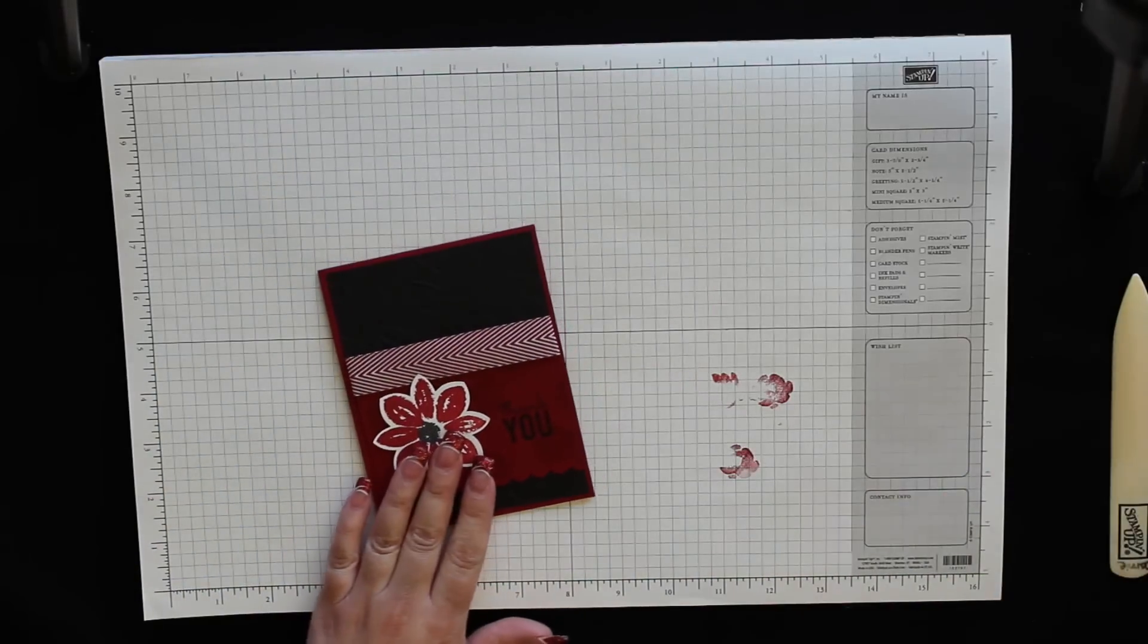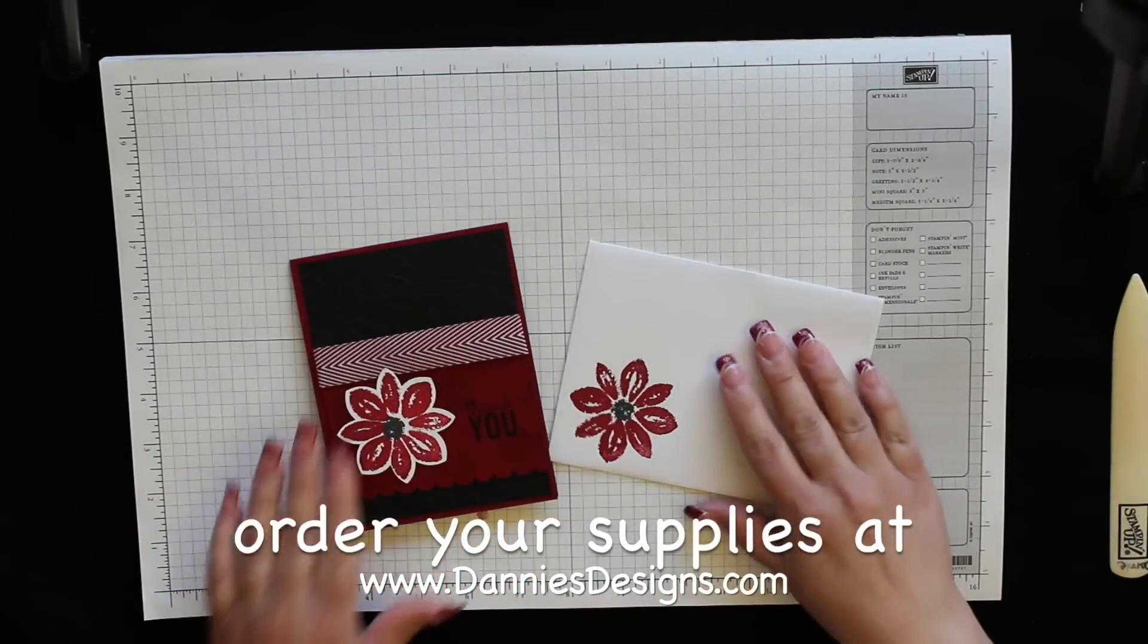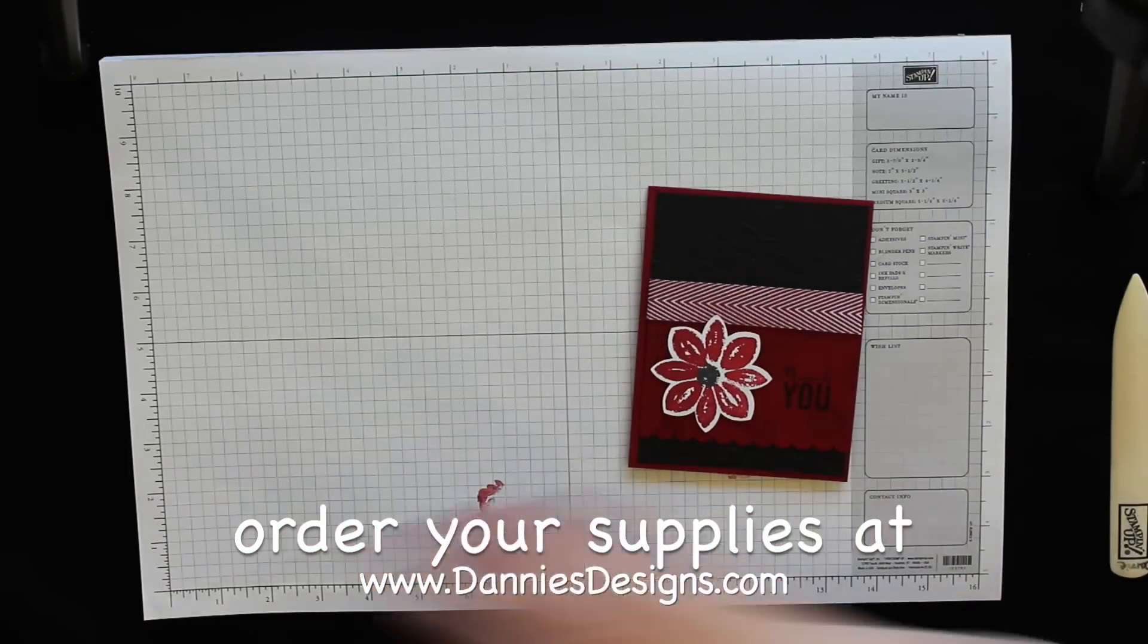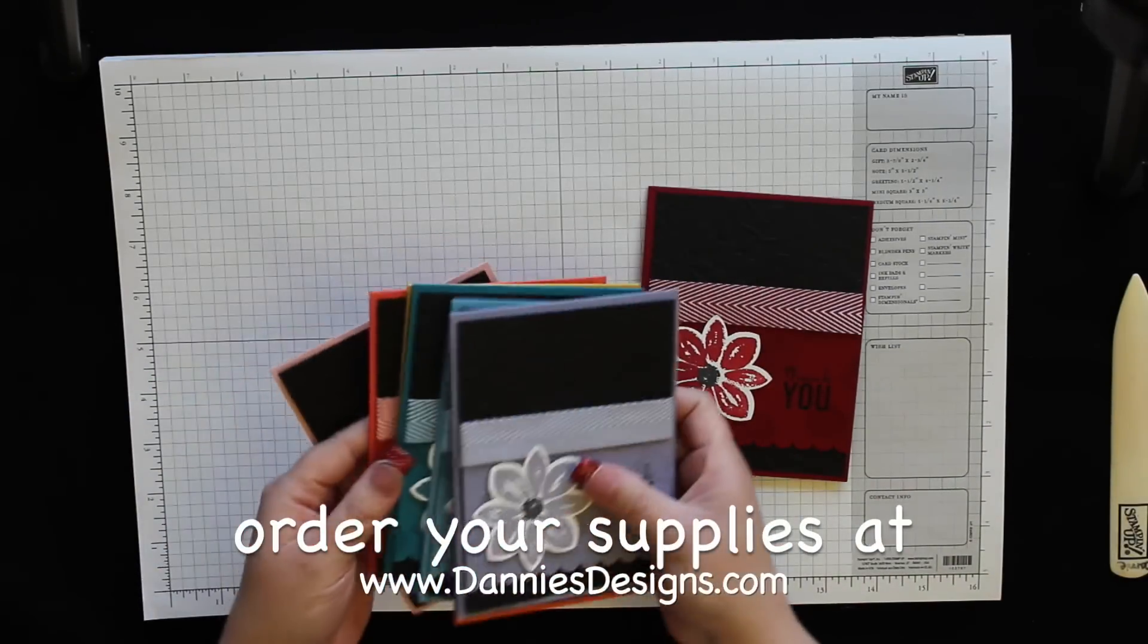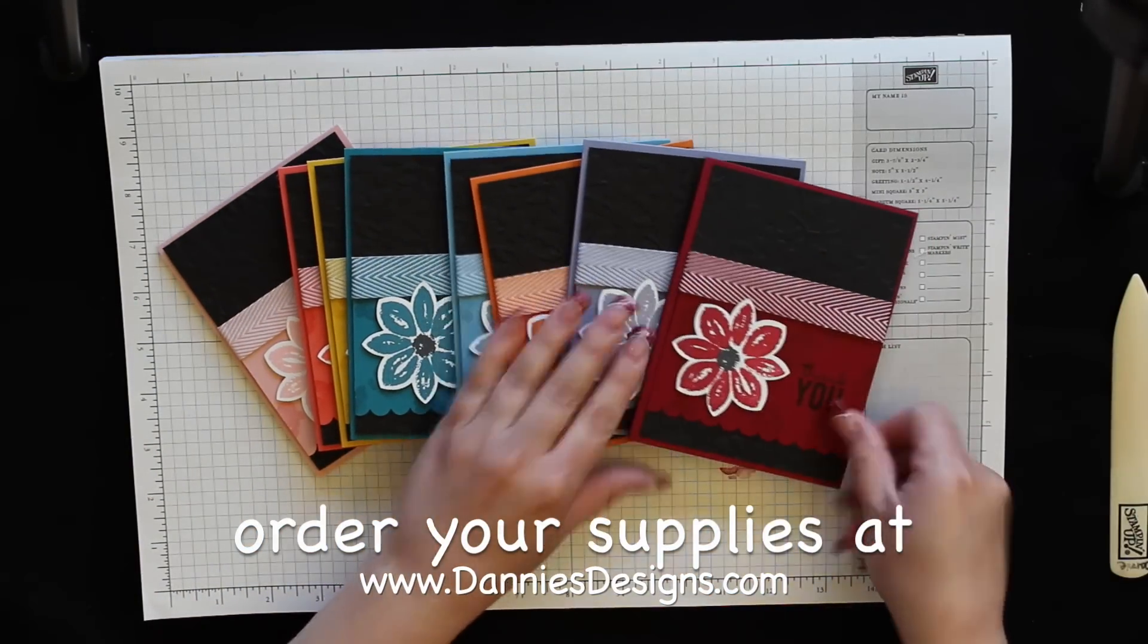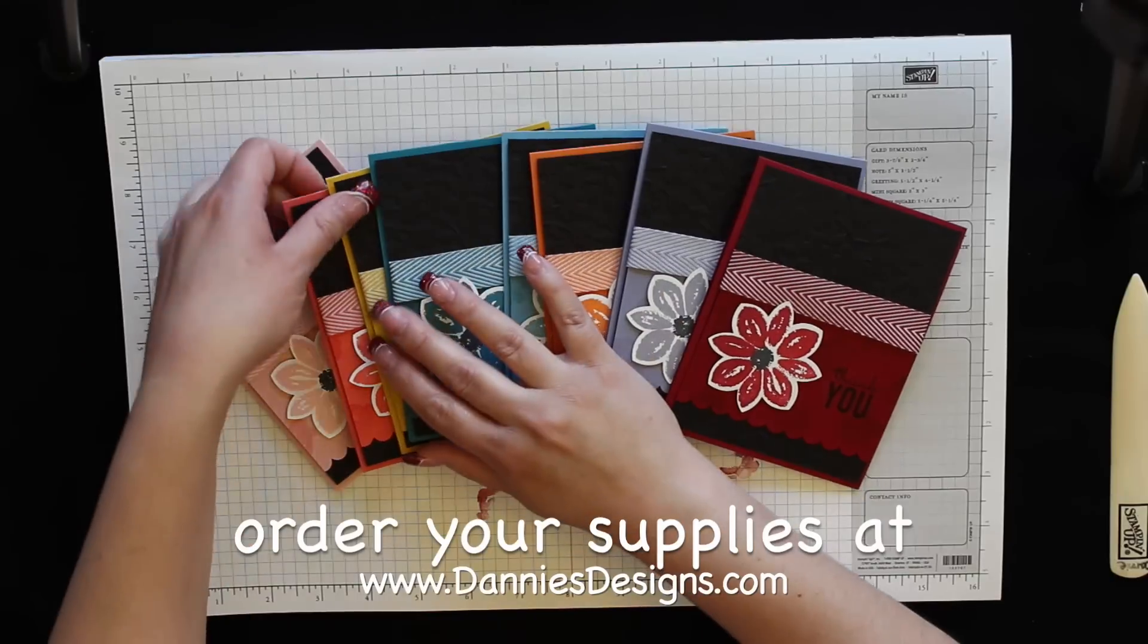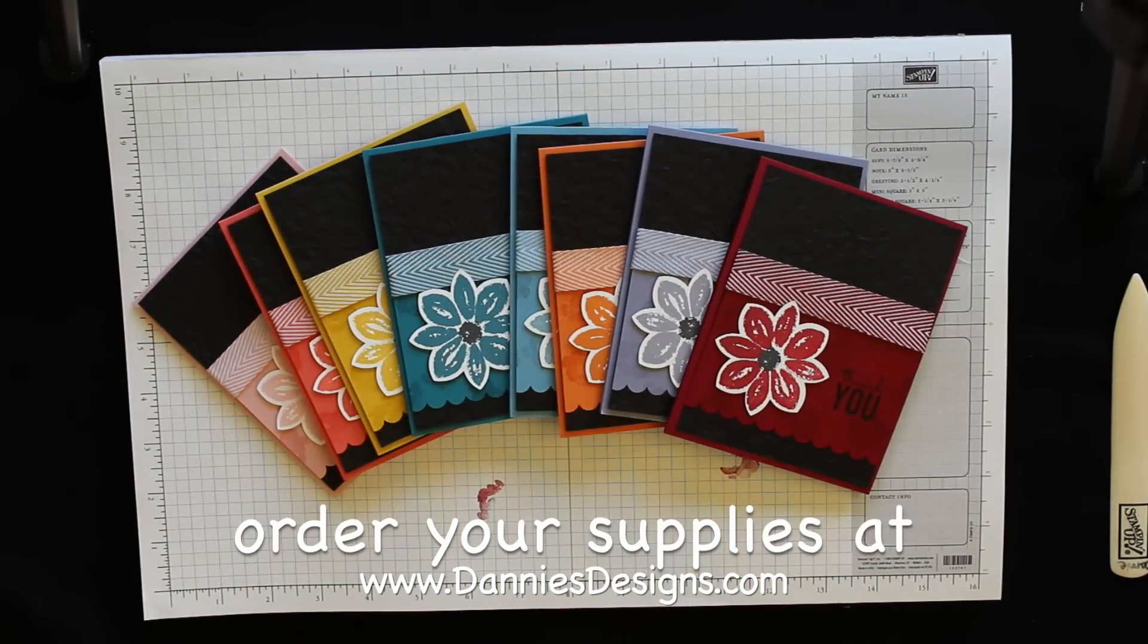So my card is done. And of course, I had to stamp a coordinating envelope to go along with that one as well. So to bring them all in, this is my whole set of cards right here along with my favorite color, cherry cobbler. I hope you enjoyed the tutorial. Thanks so much for stopping by.